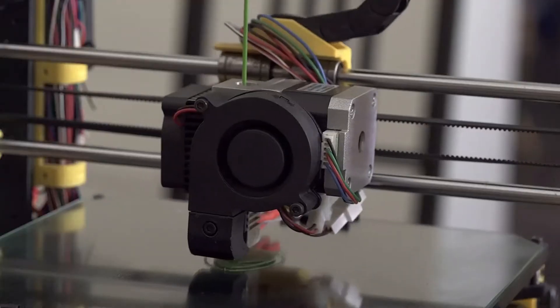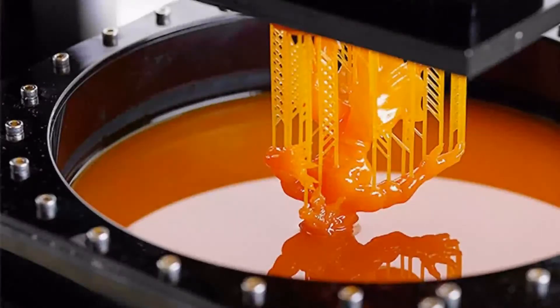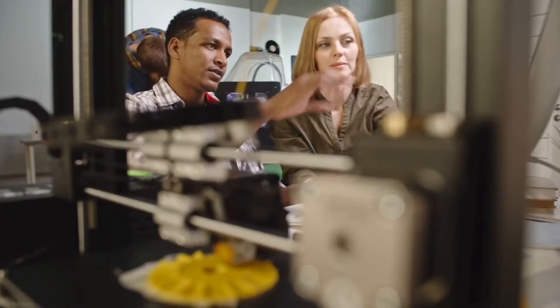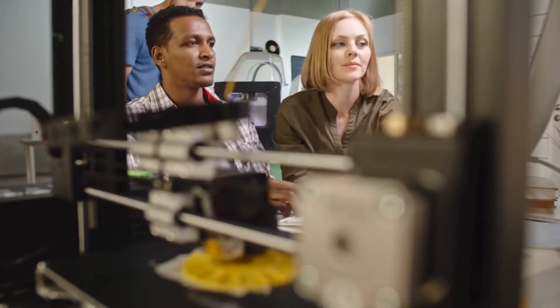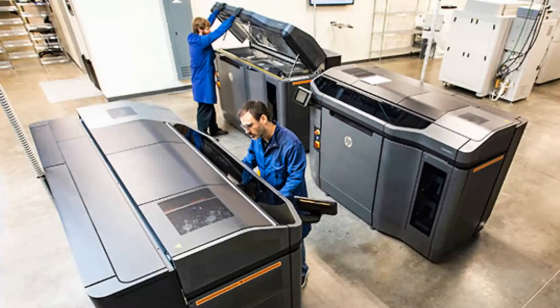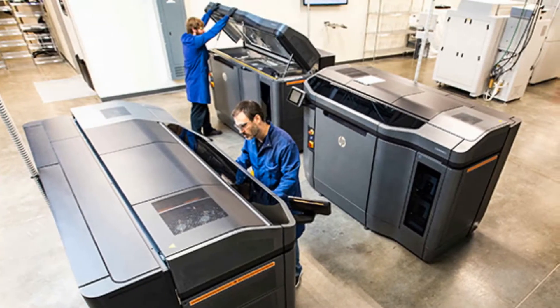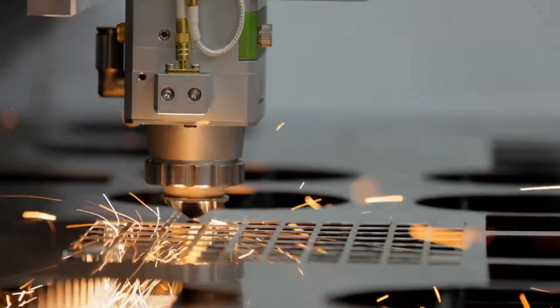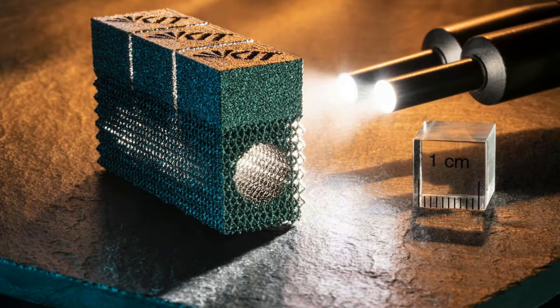There are several types of 3D printing, which include stereolithography (SLA), selective laser sintering (SLS), fused deposition modeling (FDM), digital light process (DLP), multi-jet fusion (MJF), PolyJet, direct metal laser sintering (DMLS), and electron beam melting (EBM).